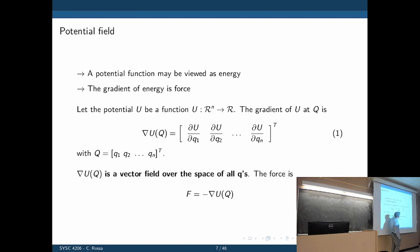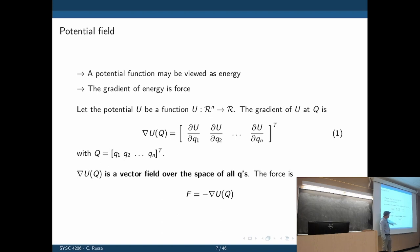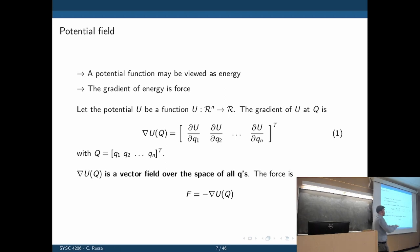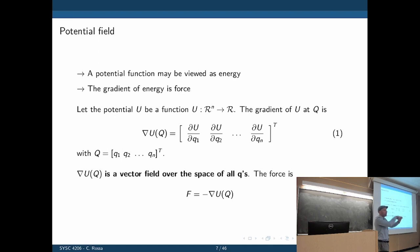Taking the gradient creates a vector field over the space of all degrees of freedom q. The force is the negative of that gradient — this negative sign ensures forces point towards the point of lowest potential. So the result is a vector field: if you position the robot at any point on that space, you know what force to apply in which direction to bring the robot towards the point of lowest potential.